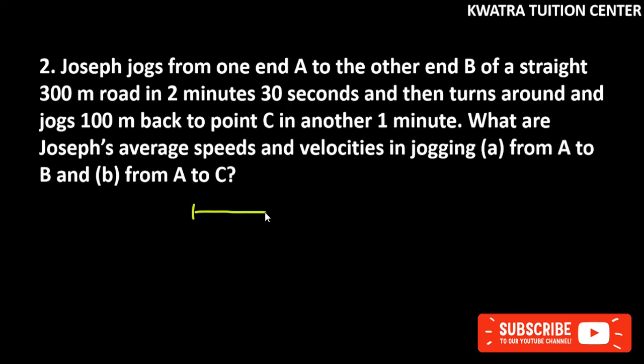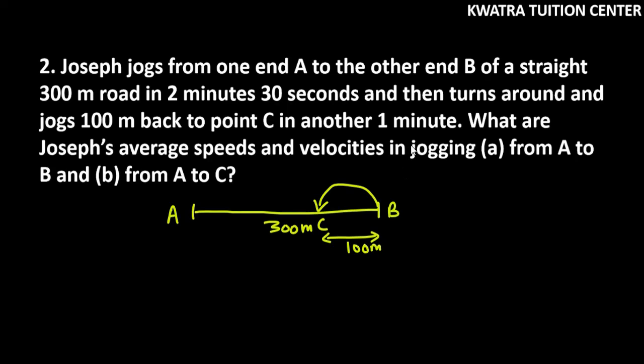First of all, if we want to draw it from A to start, B to end, how much measurement is? 300 meter. Now, from B to the other end, which point is C? And how much measurement is? It is 100 meter. Now, here we are going to ask Joseph's average speed and velocity from A to B.